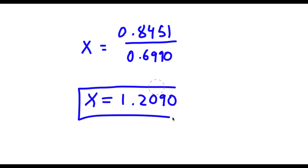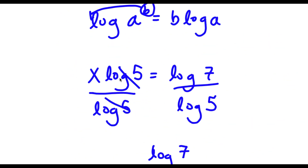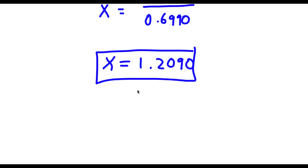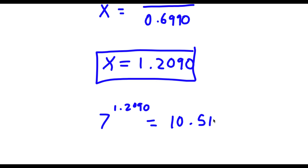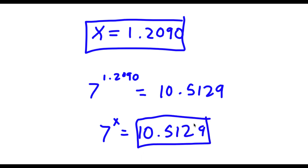This is my value for x. However, we want to find the value of 7 to the power of x. Since x equals 1.2090, then 7 to the power of x is the same thing as 7 to the power of 1.2090, and this is equal to 10.5129. So 7 to the power of x equals 10.5129 — this is my answer.